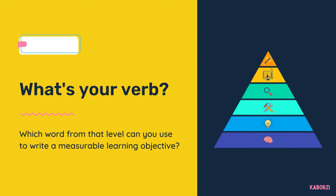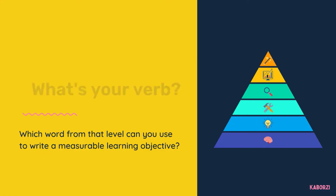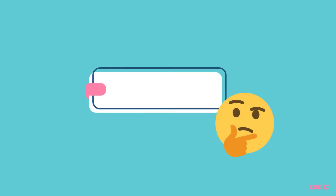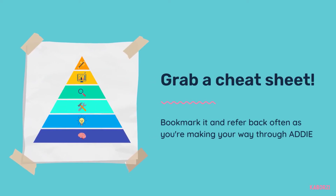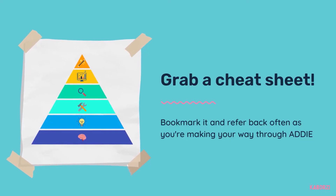Finally, the creative twist. Which word from that level's category can you use to narrow down your goal into a measurable learning objective? Try a few. Is there a synonym that could make your learning objective even more lovely? There are countless Bloom's cheat sheets available online. My advice: do some searching, find one that you like, bookmark it, and refer back to it during the analysis and design phases of ADDIE.